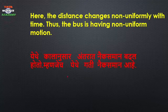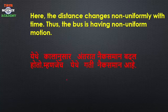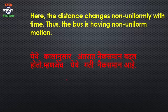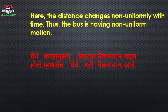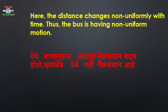So to summarize: the Distance-Time Graph for Uniform Motion is a straight line, and the Distance-Time Graph for Non-Uniform Motion is a curve line. The next part will cover the Velocity-Time Graph for uniform velocity and uniform acceleration.